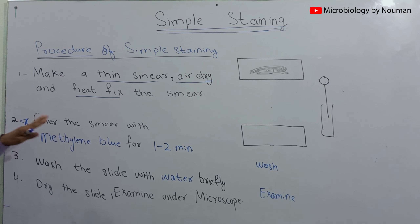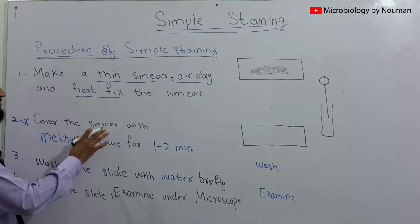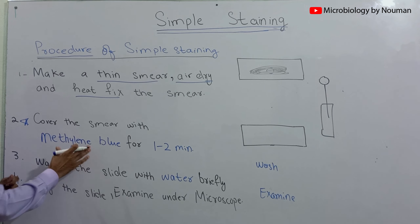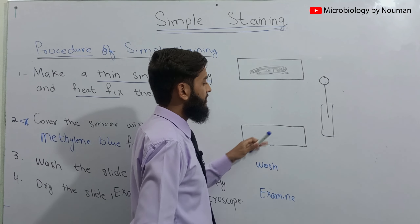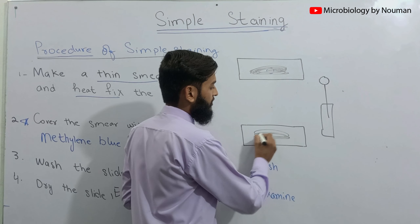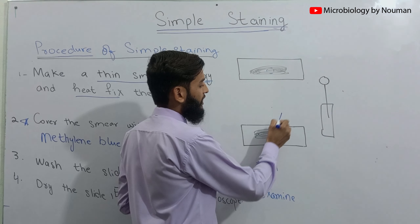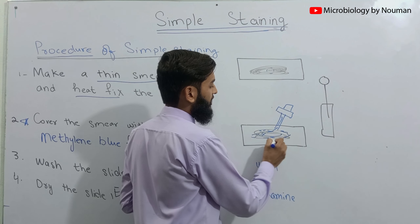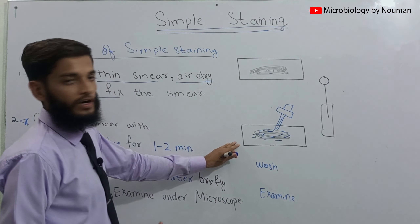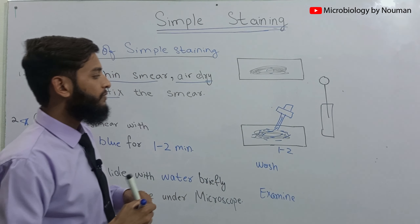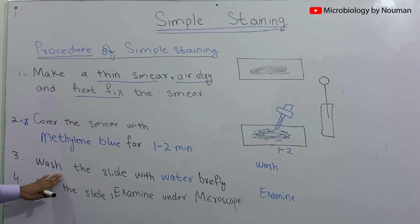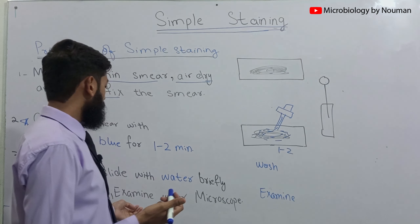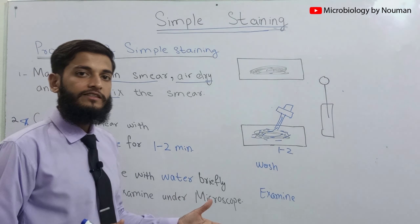The very important step of this simple staining procedure is to cover the smear with methylene blue — we can use any basic stain, but mostly methylene blue is used. We cover the smear with methylene blue for one to two minutes. After one to two minutes, we gently wash the slide with water. Then we let the slide dry as all the water evaporates, and finally we examine the slide under the microscope.